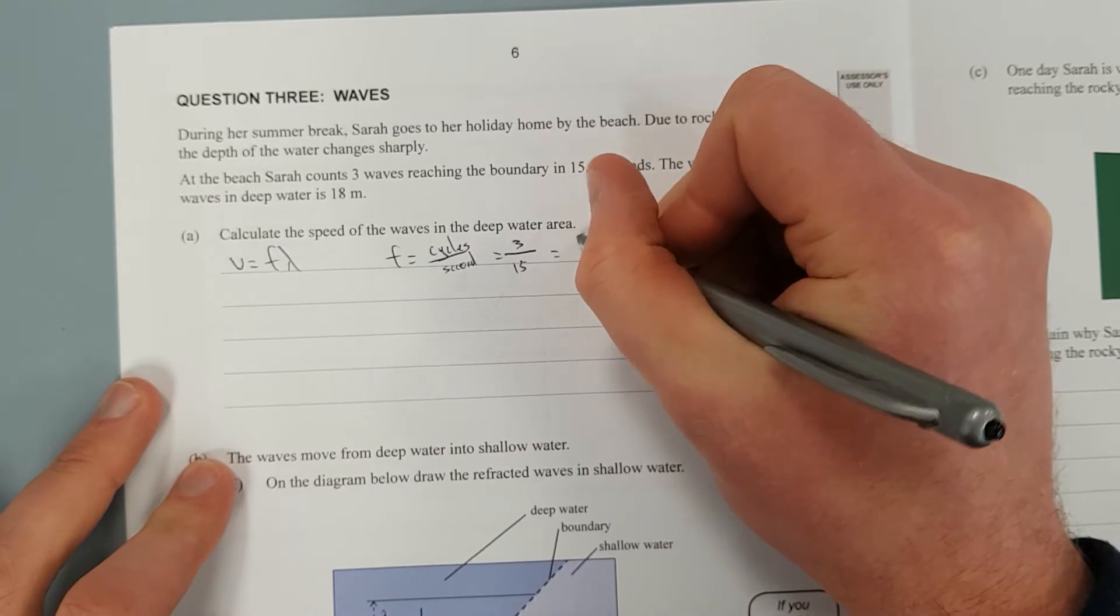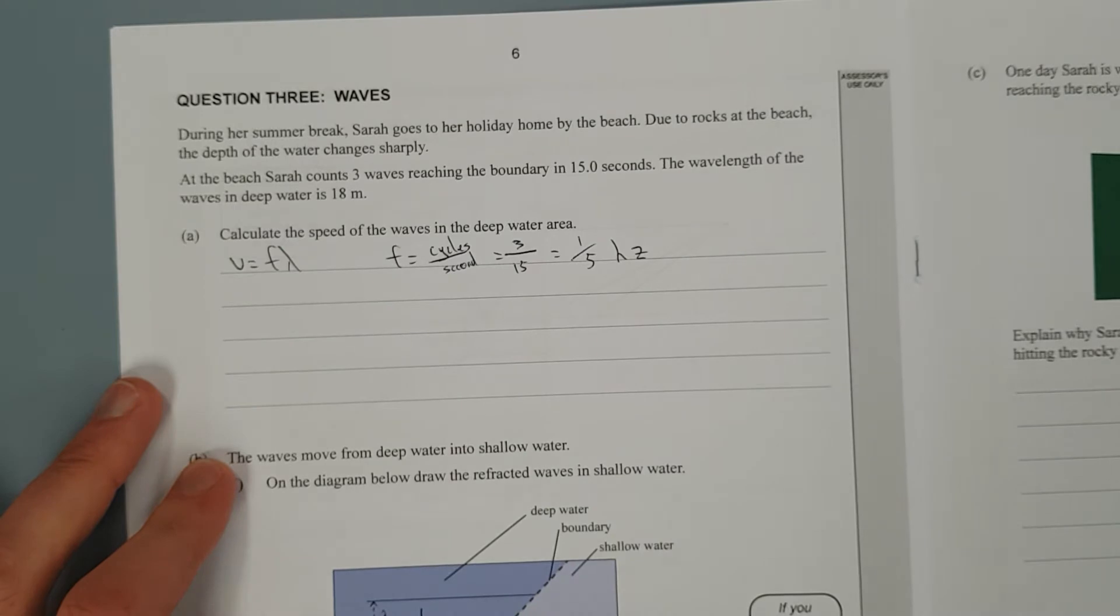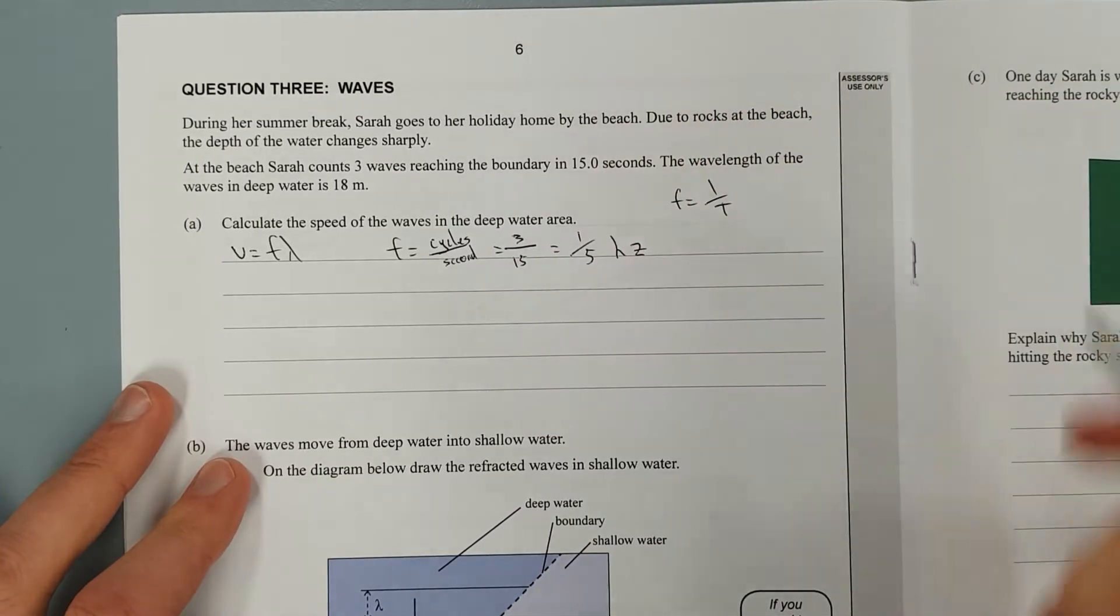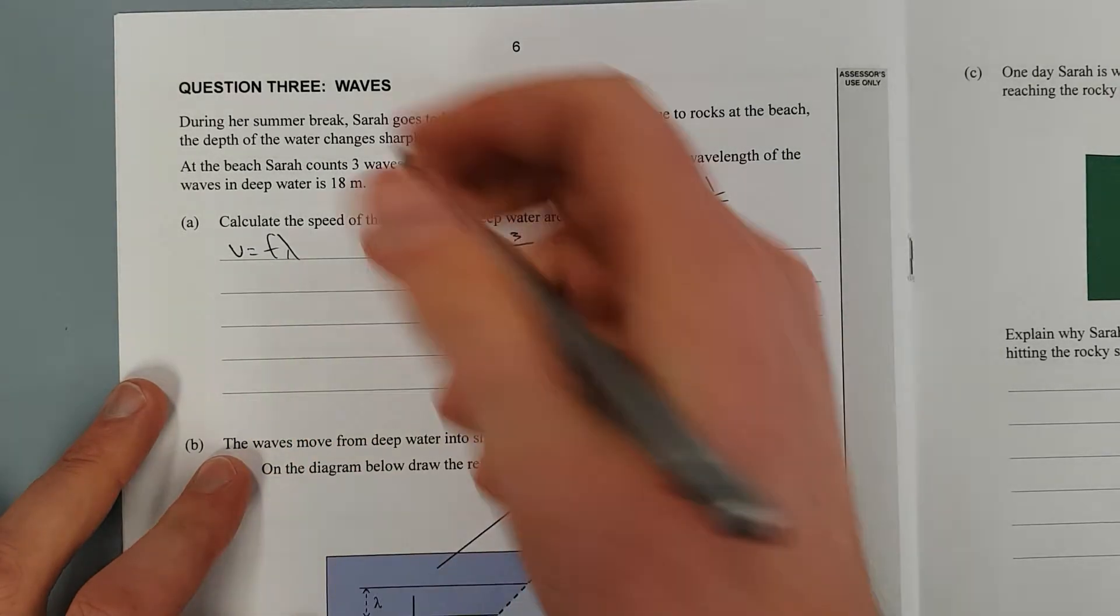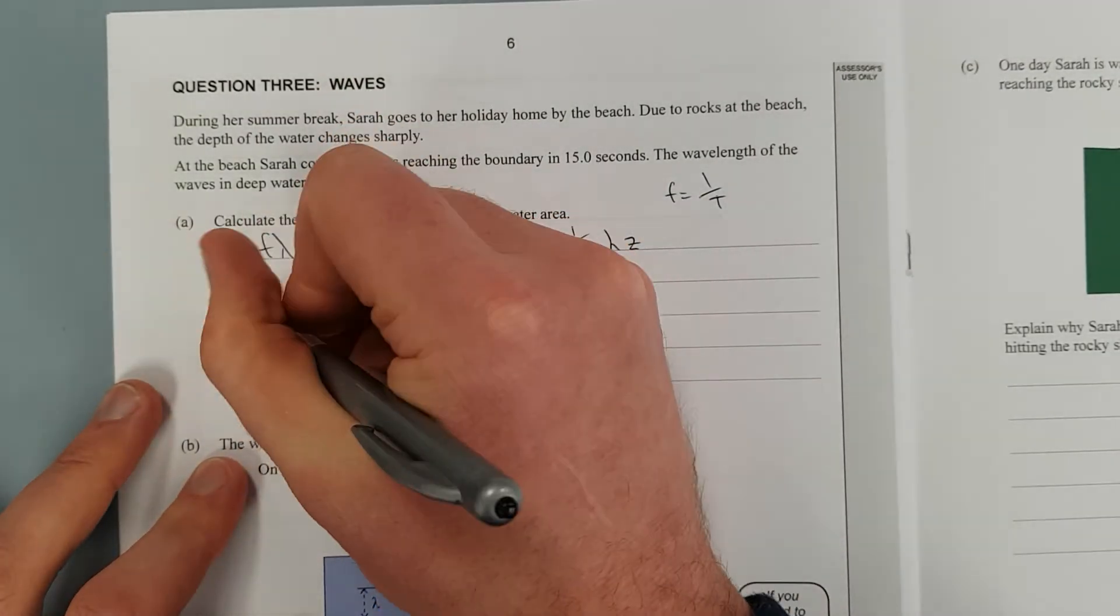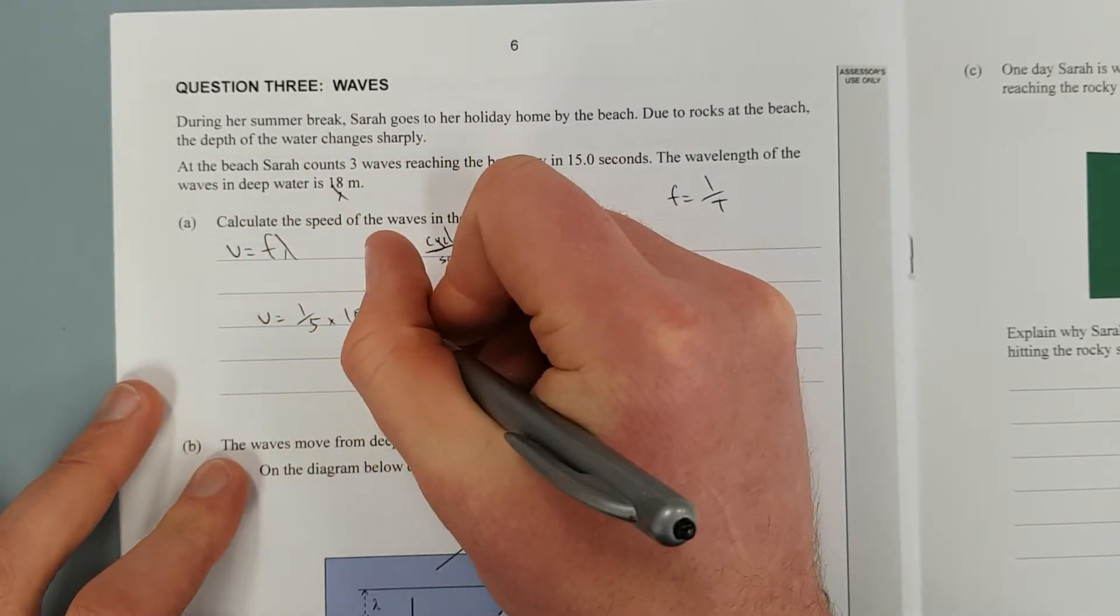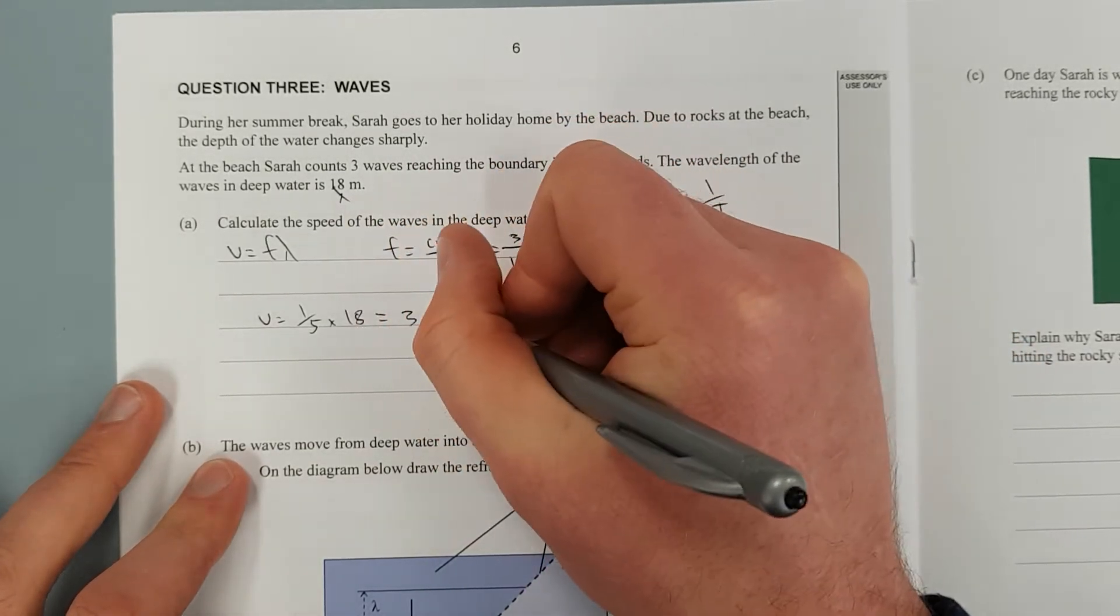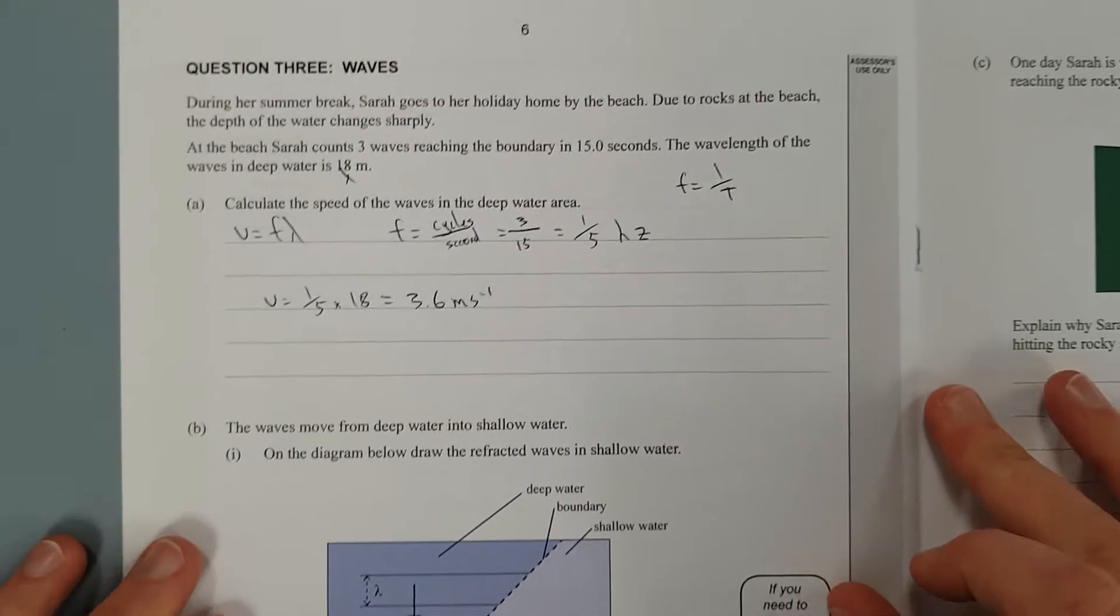And that is one-fifth of a hertz. That's the way to remember it. Period is the opposite. Period is how long it takes to do a cycle. And that's why F is equal to one over T and T is equal to one over F. So now we have one-fifth, we have the wavelength that's 18 metres. So we have V is equal to one-fifth times 18, which is equal to 3.6 metres per second.